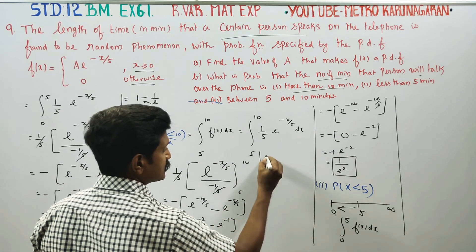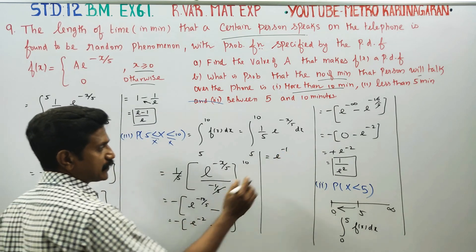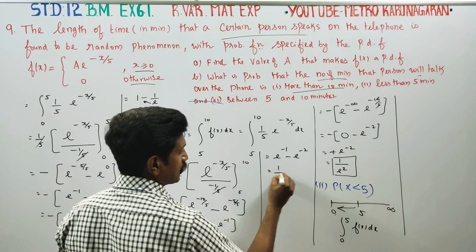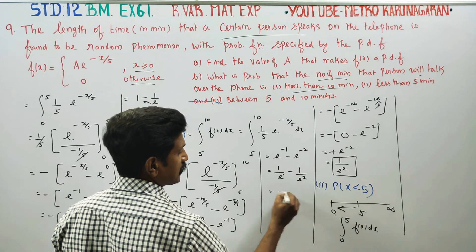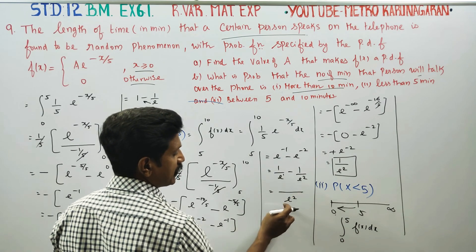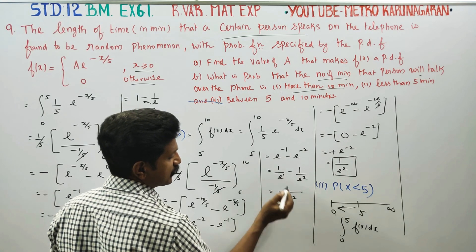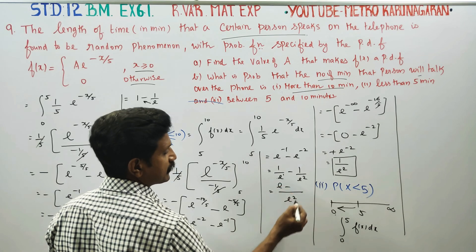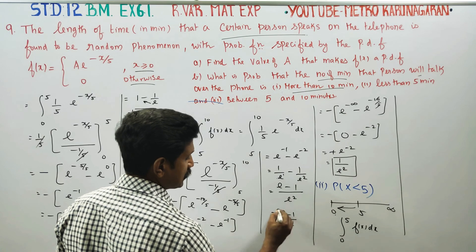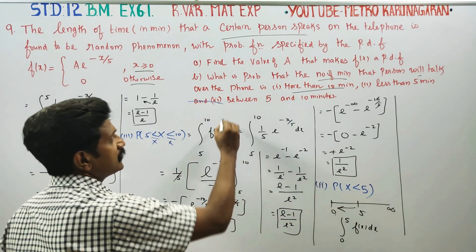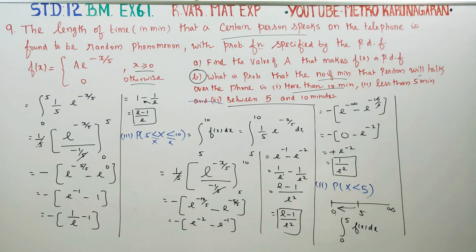Upper limit minus lower limit equals minus e to the power of minus 2 plus e to the power of minus 1. This equals 1 by e minus 1 by e squared. Taking LCM as e squared: e over e squared minus 1 over e squared gives (e minus 1) by e squared. Therefore, your answer is (e minus 1) by e squared. This completes the third subdivision, and (e minus 1) by e squared is your final answer.